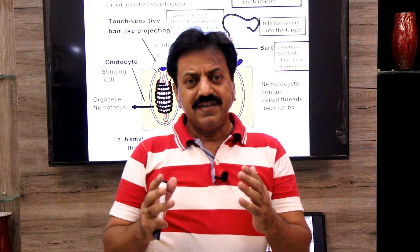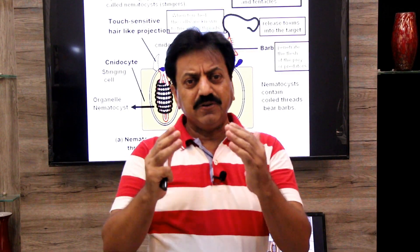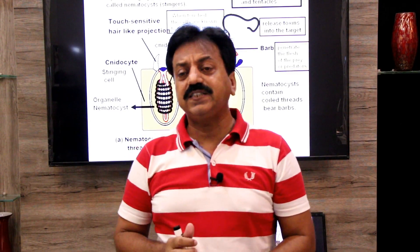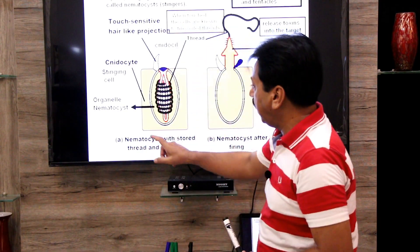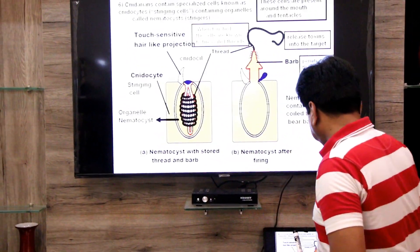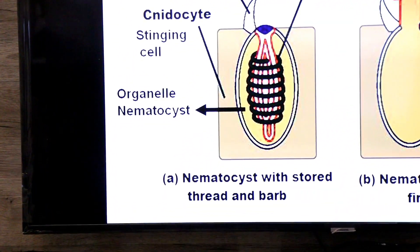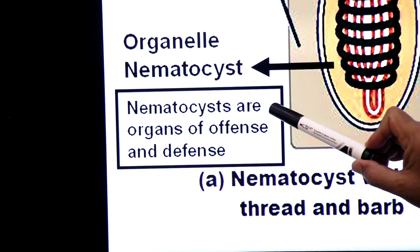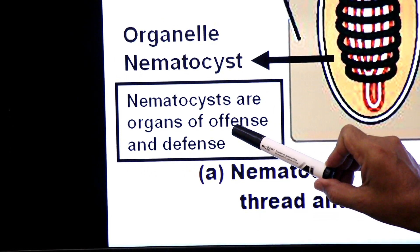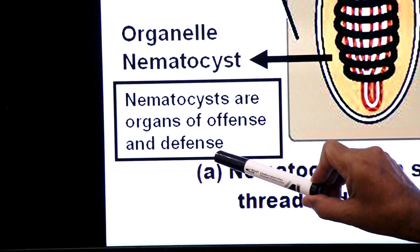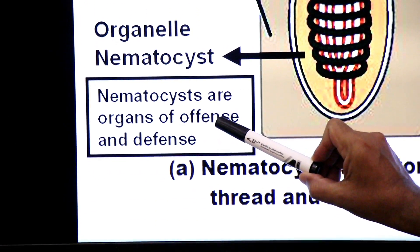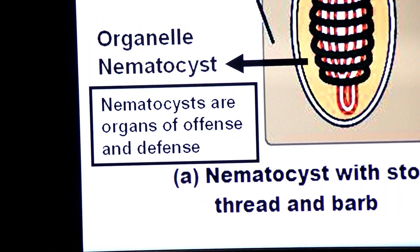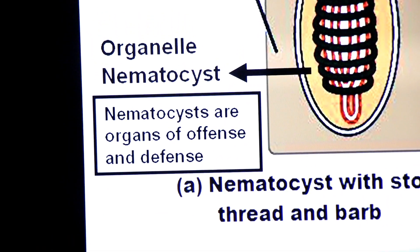So nematocysts serve as organs of offense — to attack prey — and defense — to protect themselves from predators. The barb penetrates the flesh and the thread releases toxin to paralyze the prey. Nematocysts are therefore called organs of offense and defense.